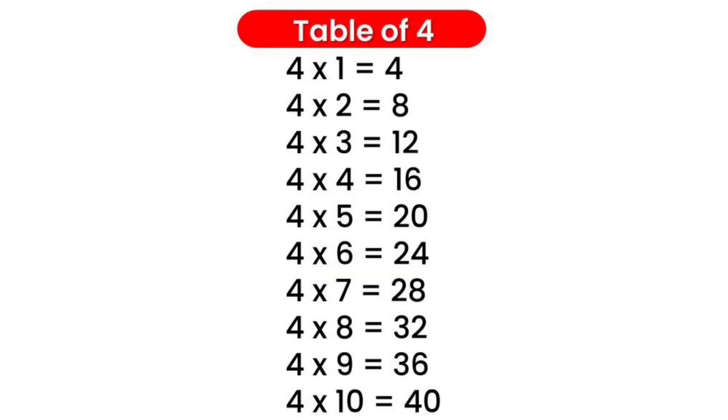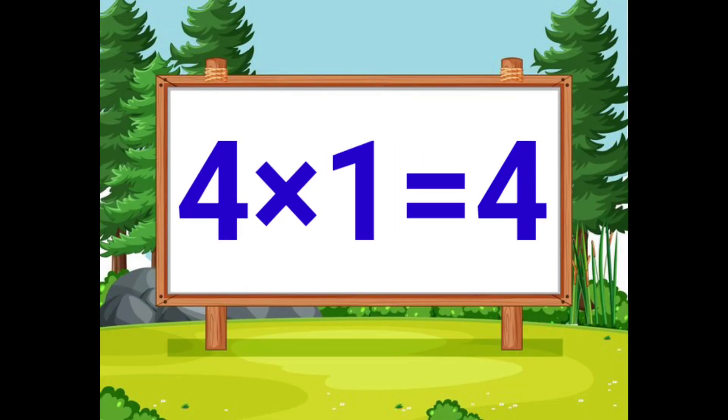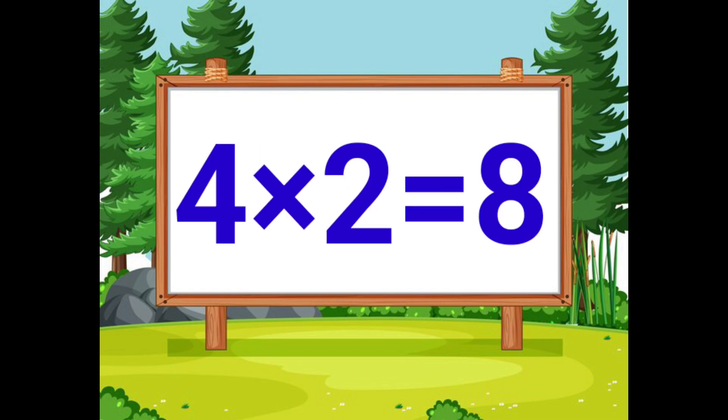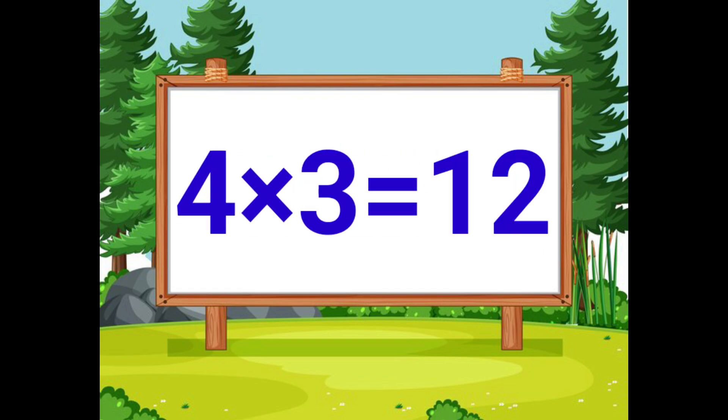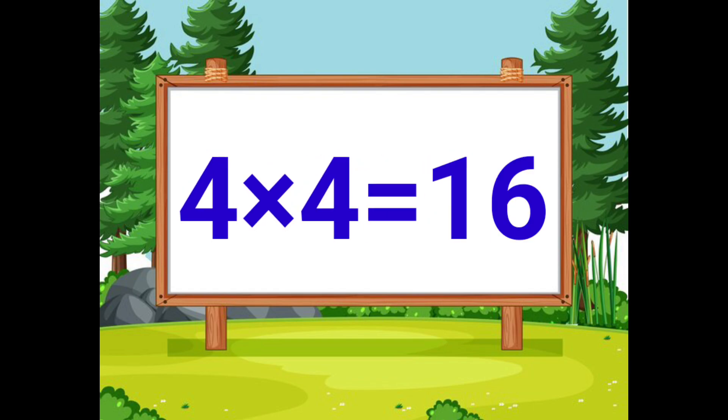First we will see the 4 table. Four ones are four. Four twos are eight. Four threes are twelve. Four fours are sixteen.